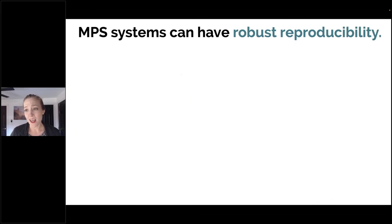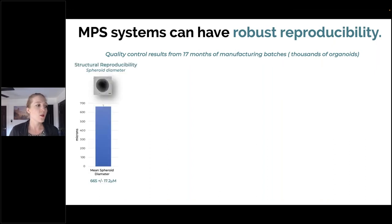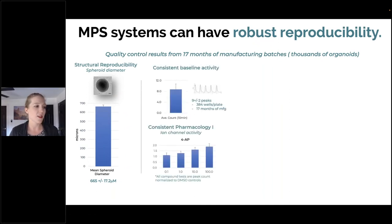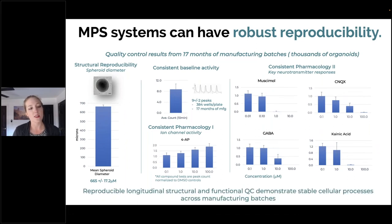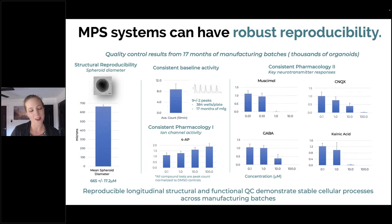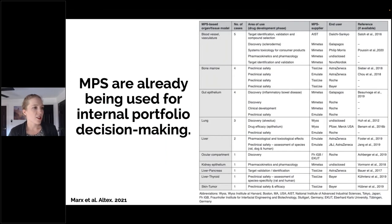Other important factors about MPS: they can have robust reproducibility. Looking at quality control results from 17 months of manufacturing batches — thousands of organoids from one provider — you see really tight spheroid diameter, baseline activity, pharmacology responses in terms of ion channels, and key neurotransmitter responses. This demonstrates stable cellular processes across manufacturing batches. We wouldn't want to recommend MPS as a replacement if they weren't reproducible, since that's something we already struggle with in our animal models. We recommend MPS already as part of a quick-win, fast-fail drug development paradigm — MPS testing early for internal portfolio decision making.